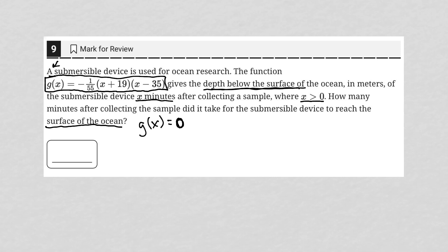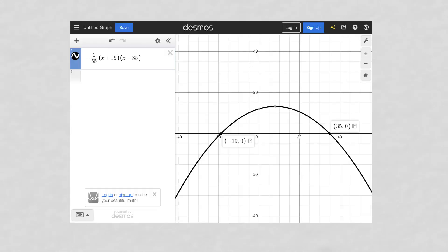So it's not that x equals zero, because we know x has to be greater than zero, but it's that g(x) equals zero. The depth below the surface of the ocean is equal to zero. So what I did with that is I just plugged this equation, this function, into Desmos, graphed it, and found where it's equal to zero.